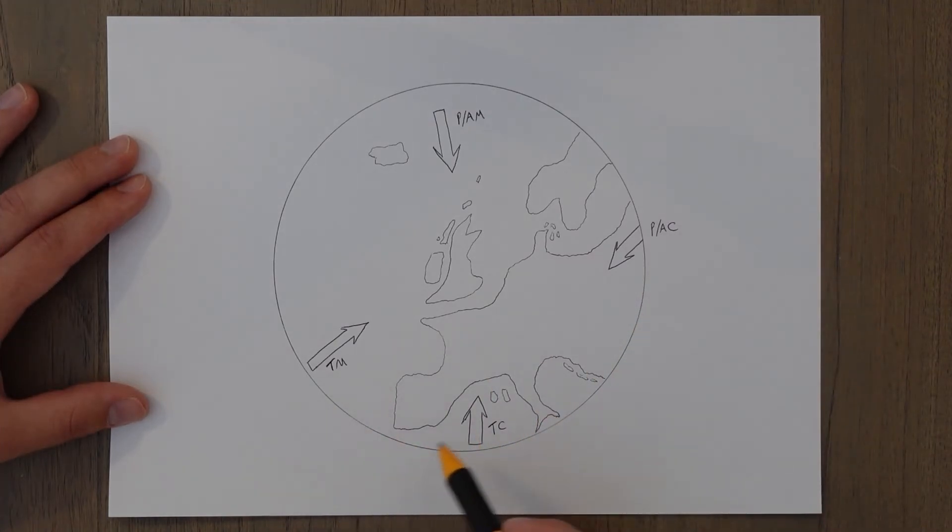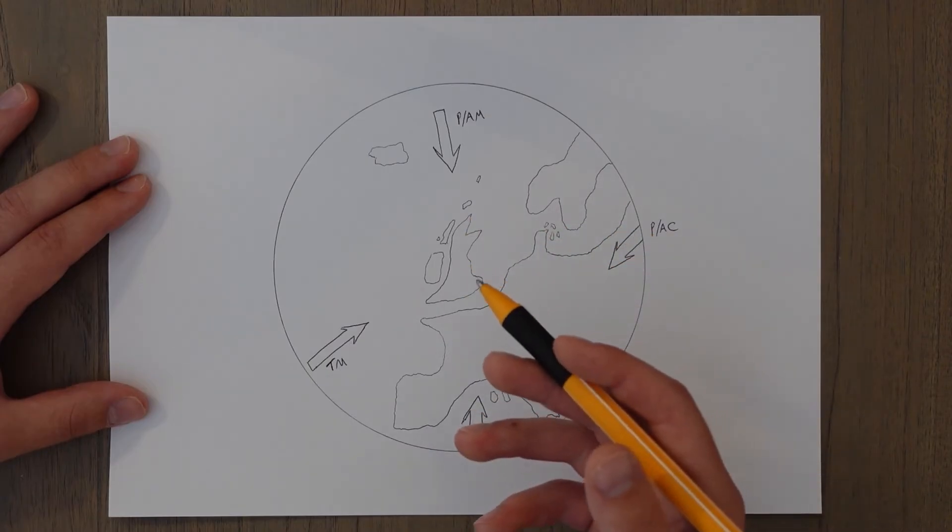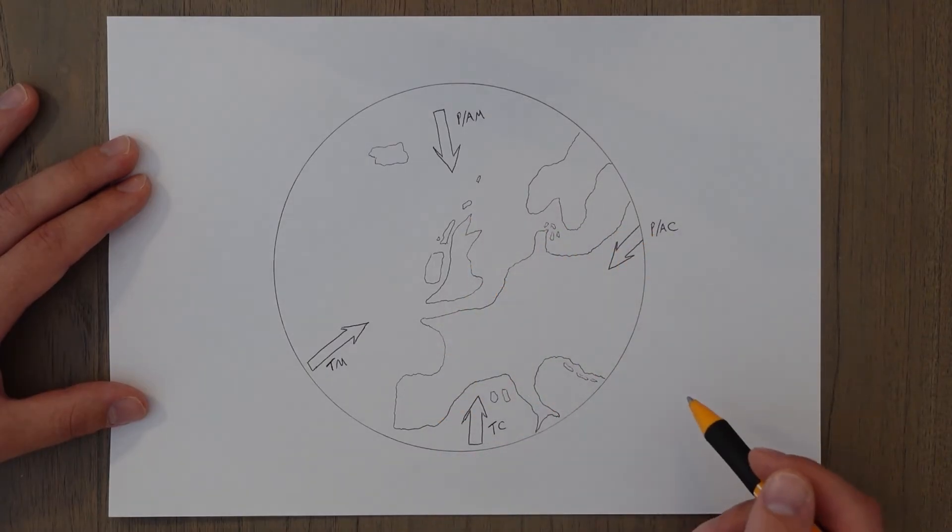As I said before equatorial air masses don't really affect Europe seeing as we're so far from the equator but the basic principles of warming and cooling as we travel to and away from the equator would apply to any of these air masses as well.